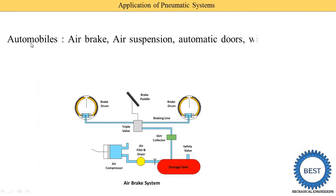The next application is in automobiles. There are a number of components in automobiles that work using hydraulic and pneumatic systems. For example, air brakes — similar to hydraulic brakes already available — are used in some vehicles as pneumatic brakes. Other pneumatic applications in automobiles include air suspension systems, automatic doors, wipers, and cushions.